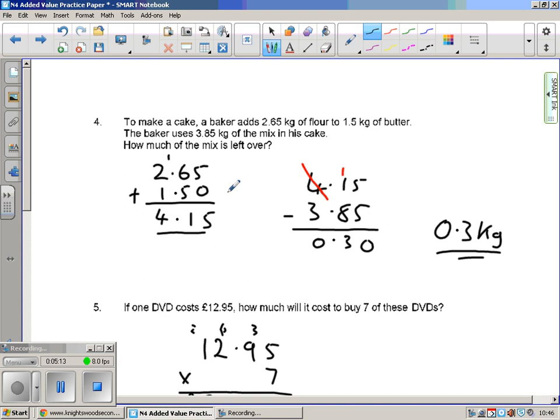He uses three point eight five kilograms so subtract it to find out what's left over. Five subtract five is nothing. Can't do one subtract eight so we need to borrow off the four which makes that a three. Eleven take away eight is three. Three subtract three is zero. So I have zero point three kilograms of mix. So zero point three, or if you like point three.